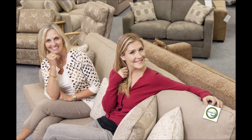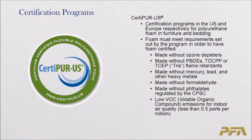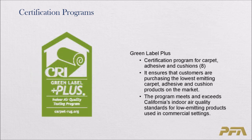Finally, briefly covering certification programs: the first is CertiPUR-US, for polyurethane foam in furniture and bedding. Foam must meet requirements set by the program to be certified. Requirements include being made without ozone depletors, without the TRIS family of flame retardants, without mercury, lead, and heavy metals, without formaldehyde, without phthalates regulated by the Consumer Product Safety Commission, and must have low VOC emissions for indoor air quality.